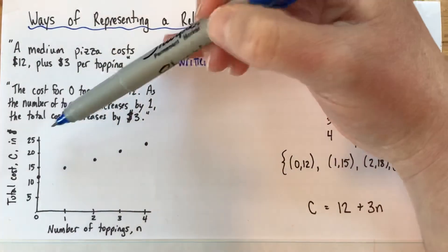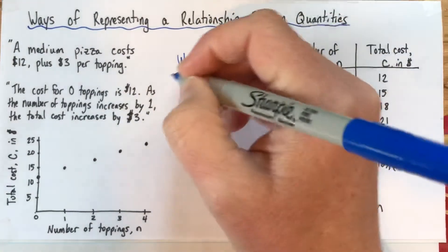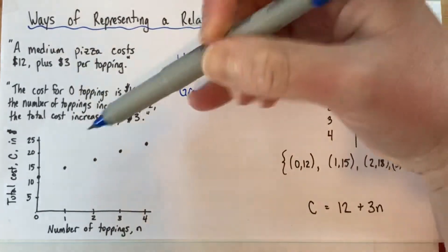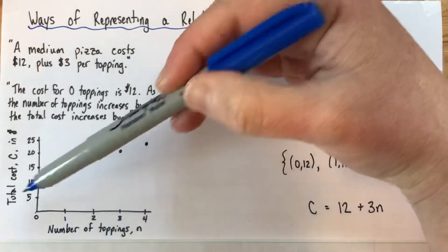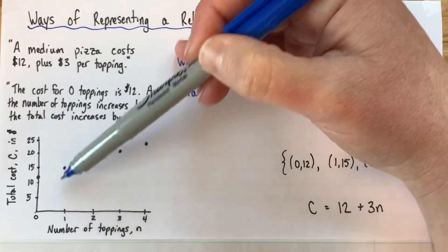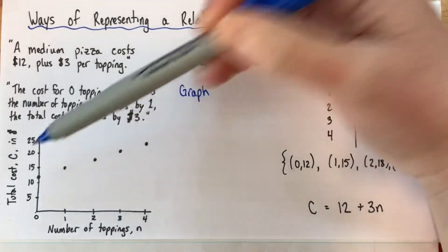So here's the third method here and this is just a graph showing the relationship. So we have the number of toppings n, the total cost c in dollars and we've got points representing well for one topping it cost this much, for three toppings it cost this much and so on.